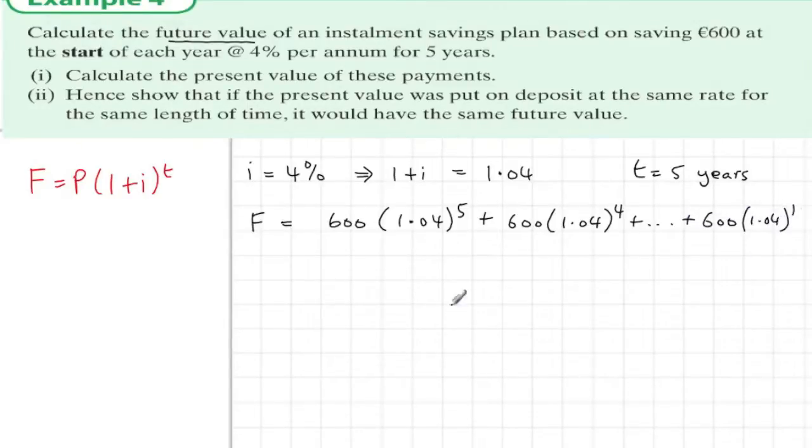And this as we know is a geometric series. We have term 5, term 4, right down to term 1. a is called term 1, the first term. So writing out what we have, a is 600 by 1.04 which is 624.